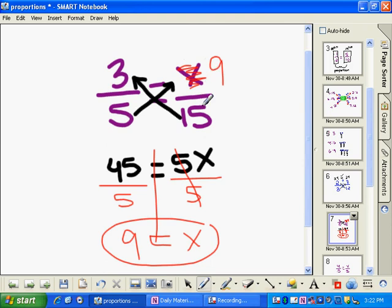5 times 9 is 45. 15 times 3 is 45. So this means that 3 to 5 is equal or is proportional to 9 to 15. These two ratios are proportional to each other.